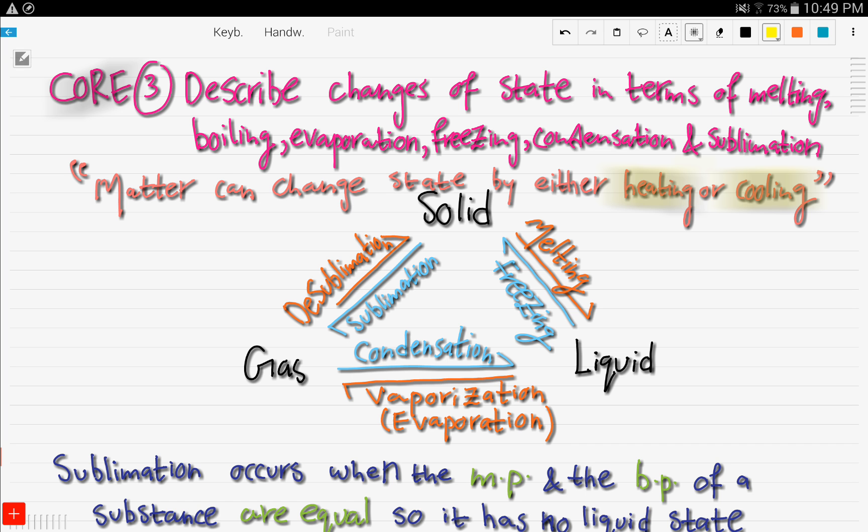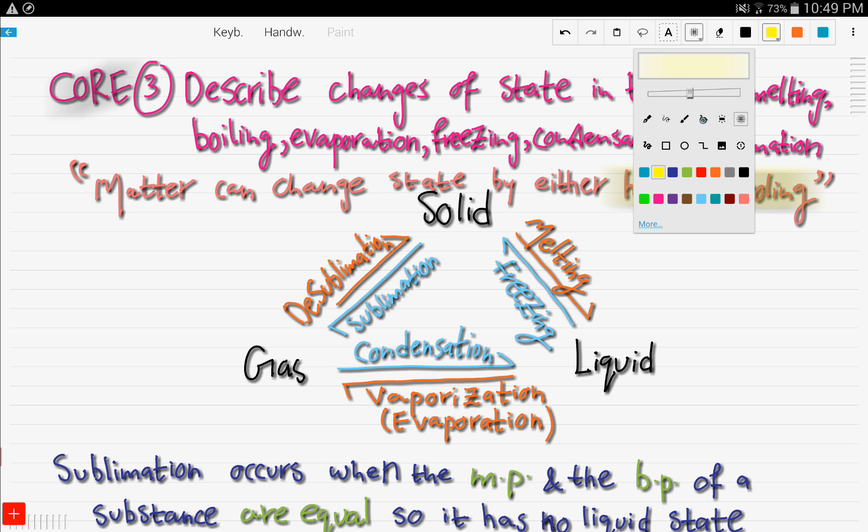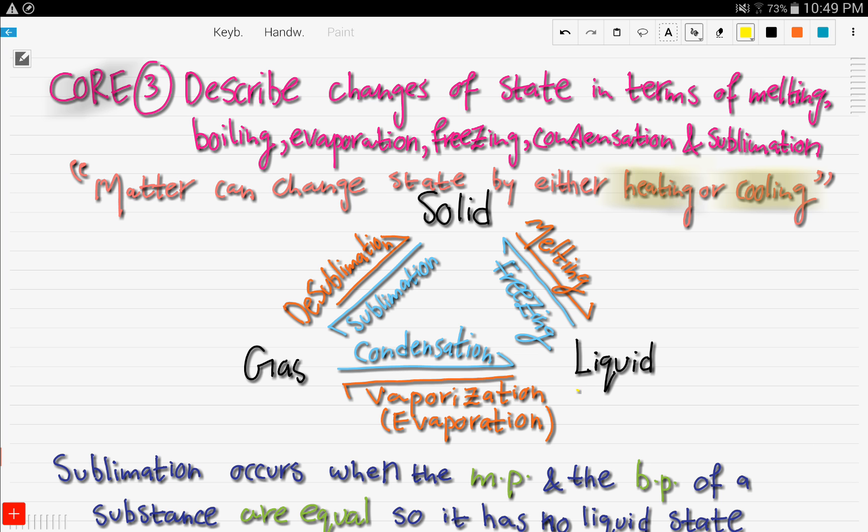So all of these processes—melting, boiling, evaporation, freezing, condensation, sublimation—they all include some sort of heating or cooling. So here's kind of a cool triangle that you need to memorize or something. From a solid to a liquid, it is melting. From a liquid to a solid, the other way around, it is freezing.